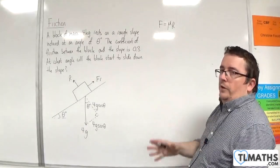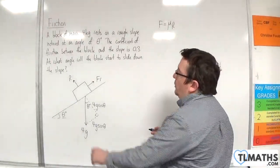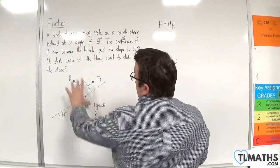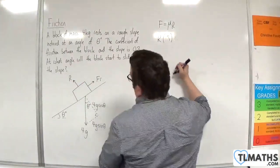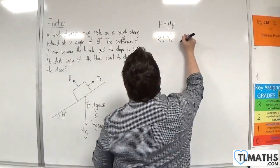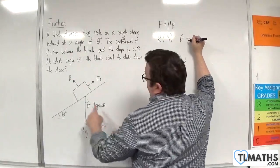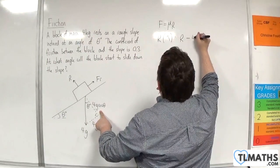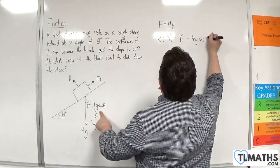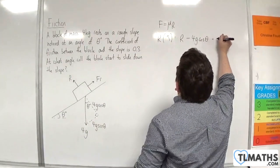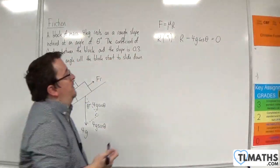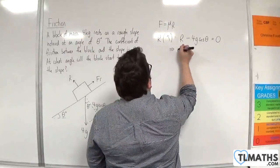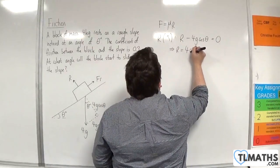So let's resolve forces. I'm going to resolve perpendicular to the plane first. So in that direction, taking that way as positive. So I would have r take away the 4g cosine theta is equal to 0, because it's not accelerating in that direction. So that means that r is 4g cosine theta.